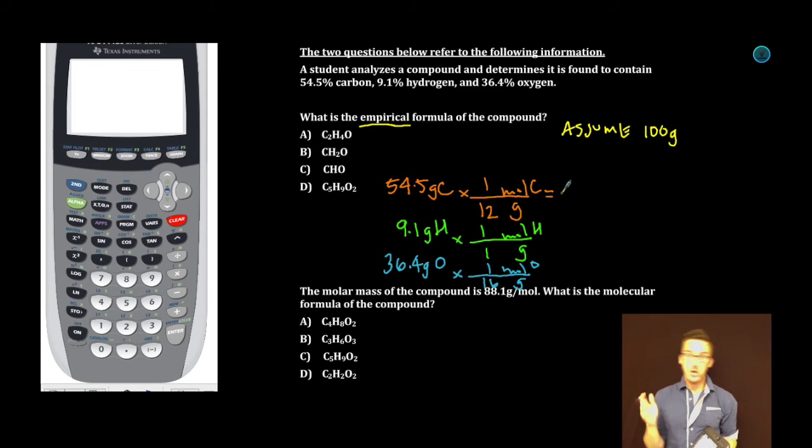Let's convert these all to moles. In each conversion, I'm using an estimated molar mass because I don't have a calculator. We've got 54.5 grams. How many times does 12 go into that? 12 times 1 is 12, times 2 is 24, times 3 is 36, times 4 is 48, times 5 would be 60—that's too far. So 4.5 moles of carbon.